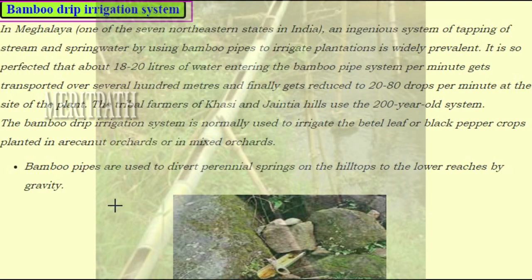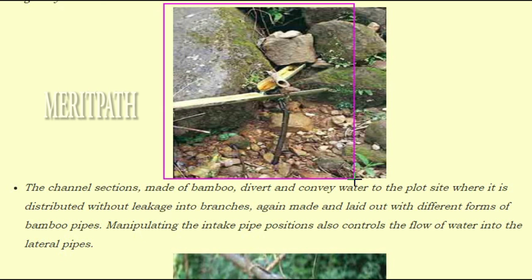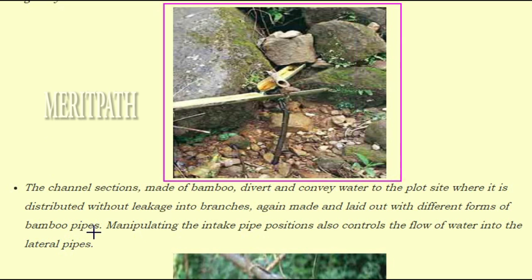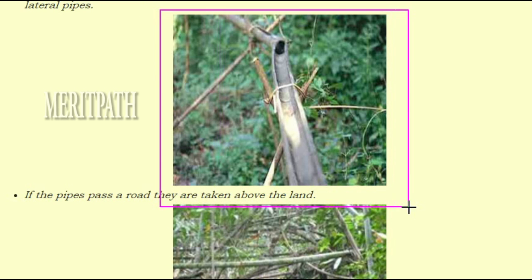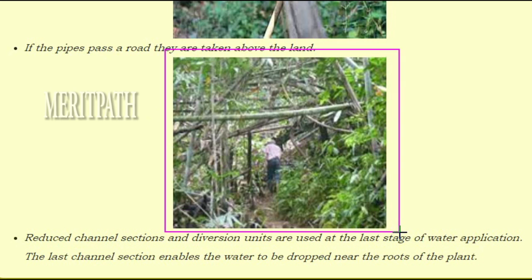Bamboo pipes are used to divert perennial springs on hilltops to the lower reaches by gravity. Channel sections made of bamboo divert and convey water to the plot side, where it is distributed without leakage into branches made of different forms of bamboo pipes. Manipulating the intake pipe positions controls the flow of water into lateral pipes. If the pipes pass a road, they are taken above the land. Reduced channel sections and diversion units are used at the last stage of water application, enabling water to be dropped near the roots of the plant.